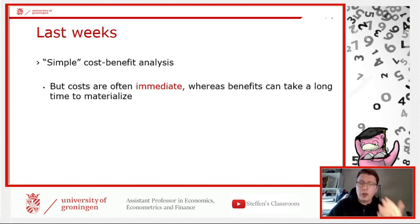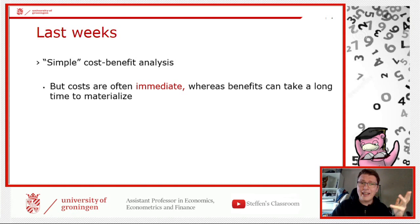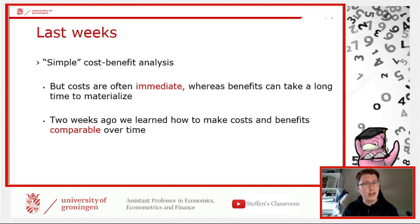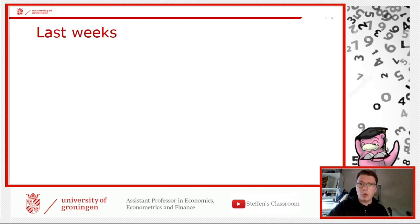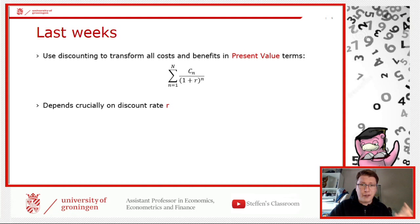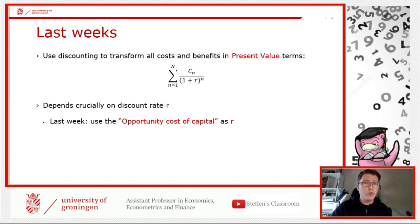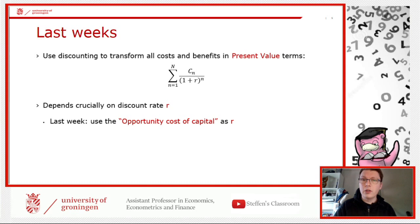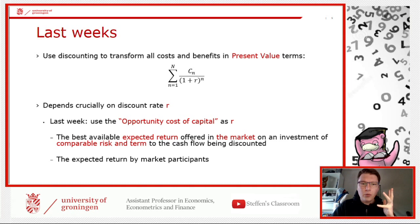We've been working a few weeks already — this is lecture four. In the previous lectures we looked at simple cost-benefit analysis: costs are typically immediate, you buy something upfront, but the benefits materialize later. You cannot compare things that happen in the future with today — you have to convert them to the same point in time. That's what we've been doing: discounting cash flows, finding the discount rate.